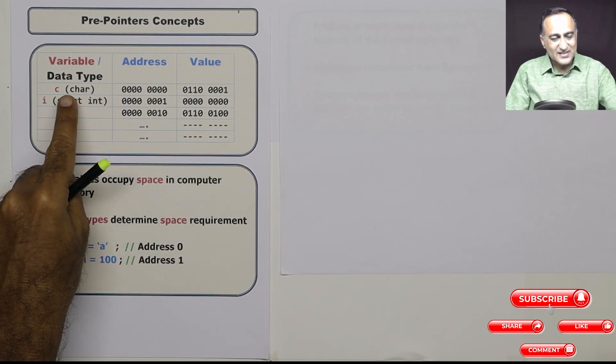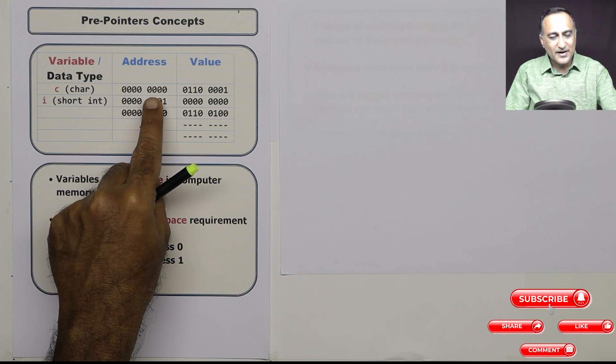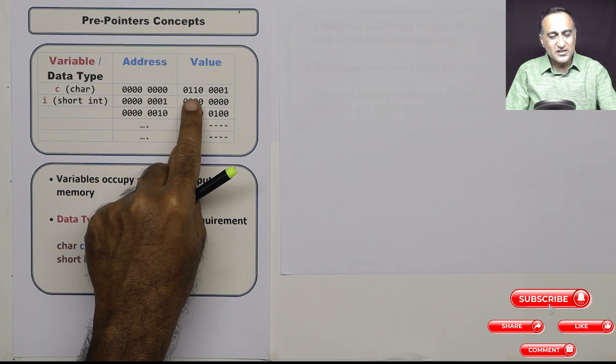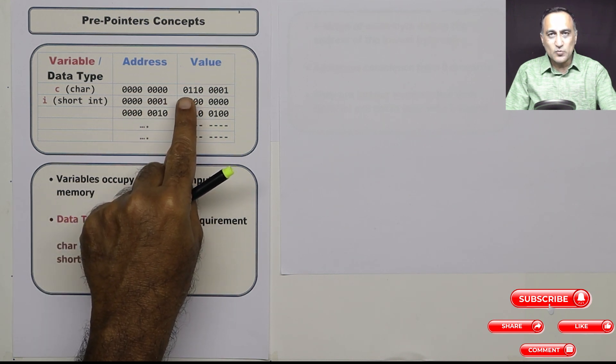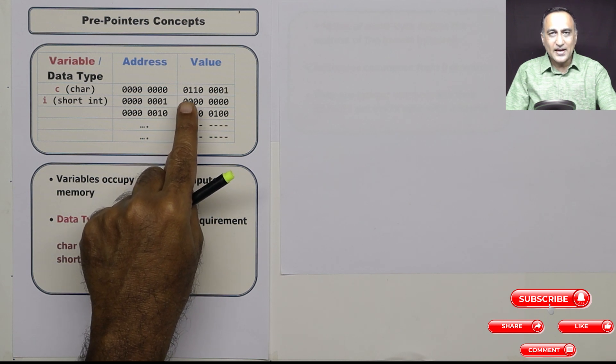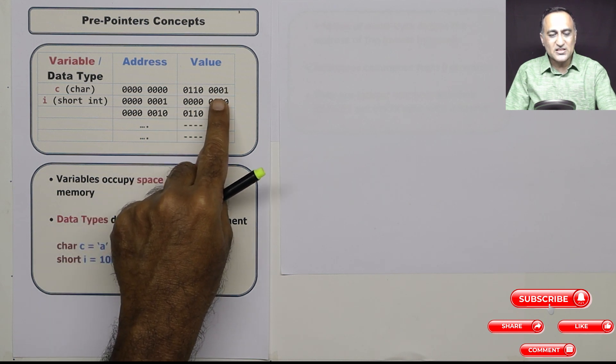So just to summarize, character c requires one byte, it's stored at address zero, and it is represented like this, assuming it is having the initial value A. So ASCII value of A is 97. So this is 97.